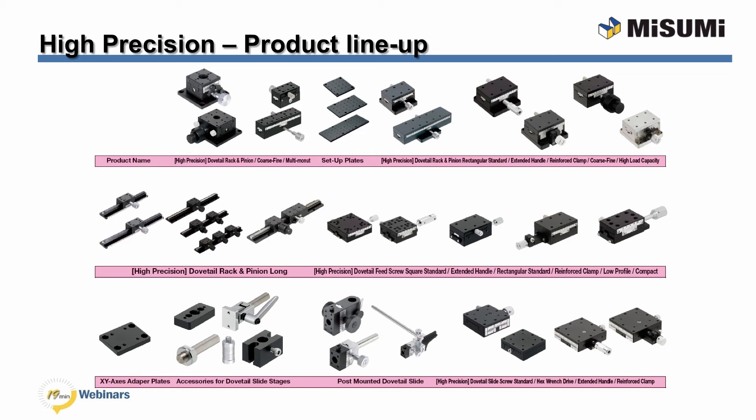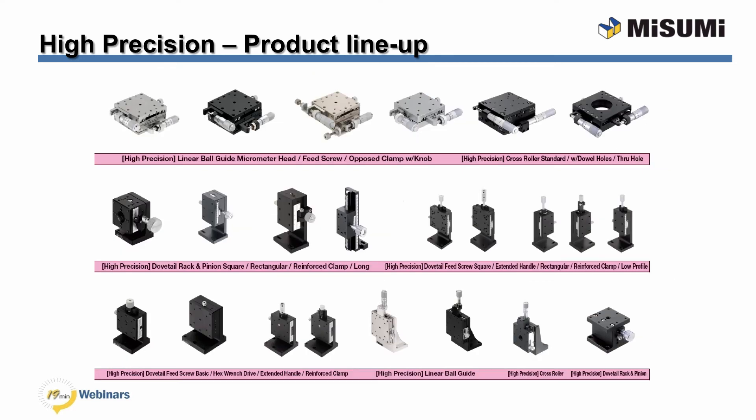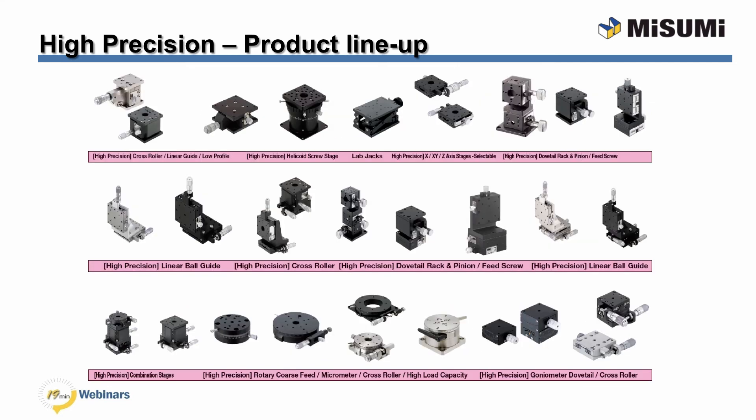This is the high precision product line. Misumi carries many different variations of high precision stages — these were the first stages that Misumi offered. As you can see, we have different axis configurations such as the x and xy-axis. These are also offered in high precision z-axis with two different types of guides. Different configurations such as the x-z, rotation, rotary table, and goniometer are also available on the high precision product lineup.